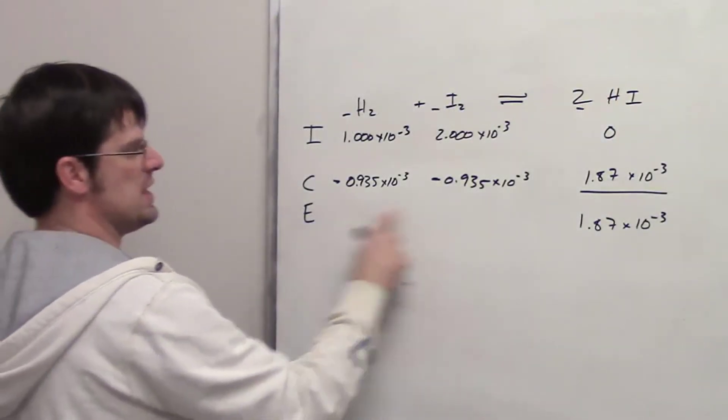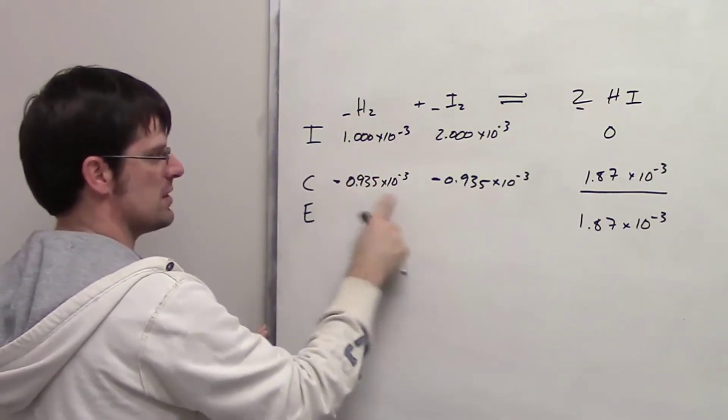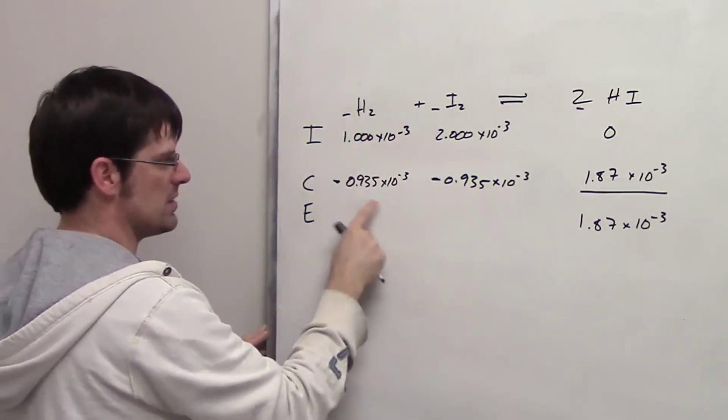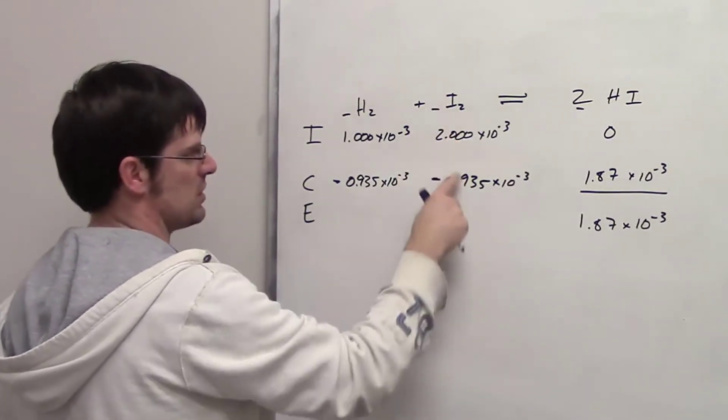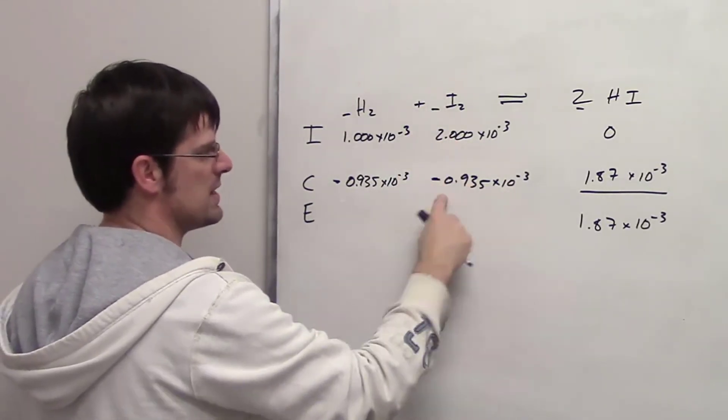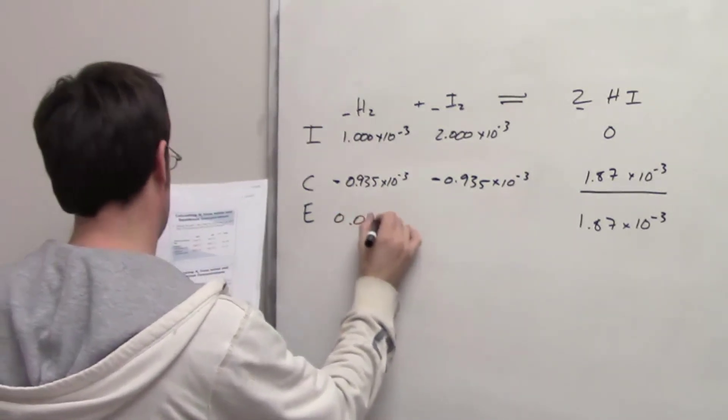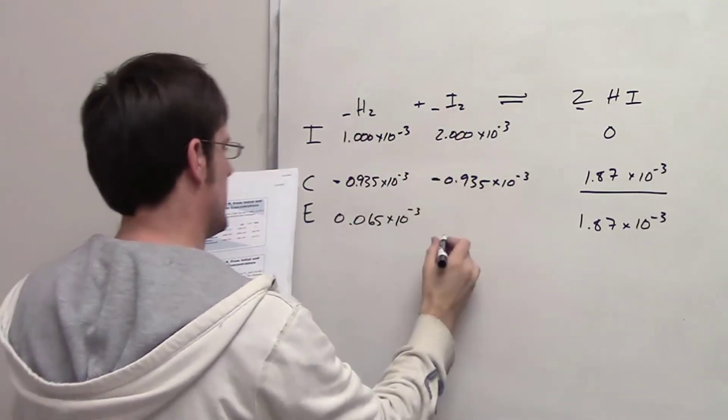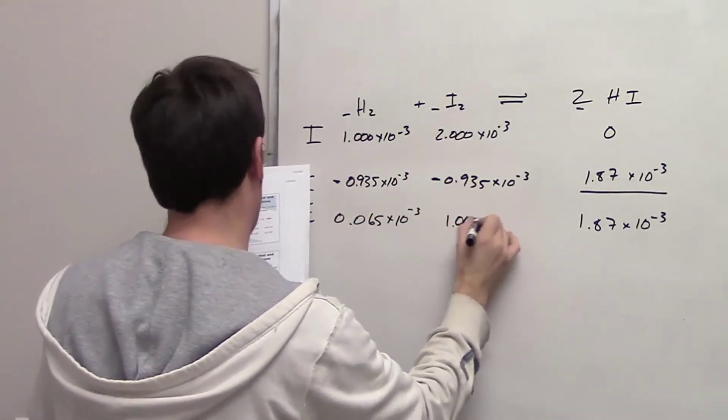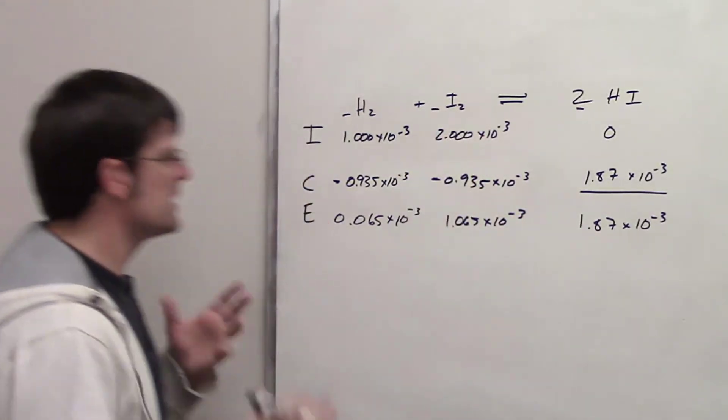In order to fill in these two blanks, all we need to do is take this number and subtract from it this number. The answer is going to be our final concentration. We then do the same process for this column. We take that number and subtract from it this number. When I do that, I end up getting 0.065 times 10 to the negative third for my hydrogen, and I get 1.065 times 10 to the negative third for my iodine.